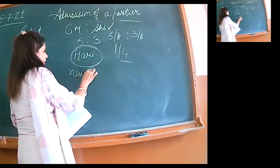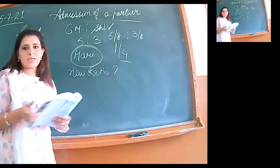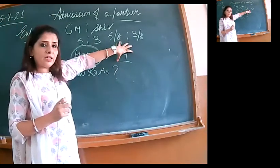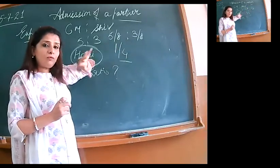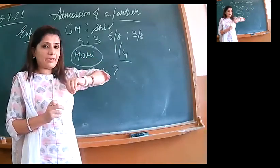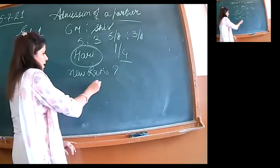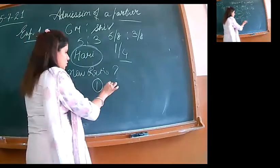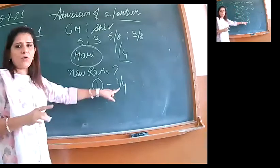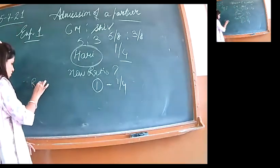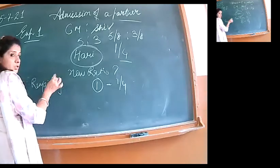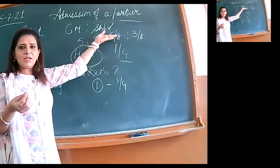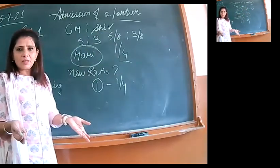Now, this topic - when we have the new partner's share given. I have to apply my mind, simple mathematics. I will be assuming, earlier my firm had whole unit one. Like one chapati. From that one chapati, we promised Hari we'll give one-fourth. So I will be calling it remaining share after Hari's admission. This you have to assume. There's no rule for this because the question is different. Old ratio is given, new partner's share is given, and you have to calculate.